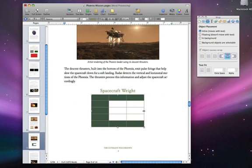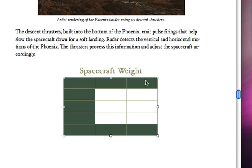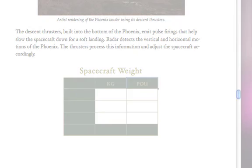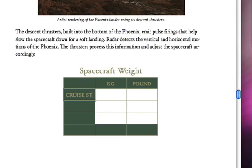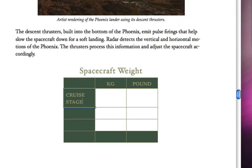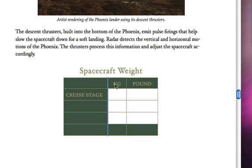To add your text to the table, just click inside a cell and start typing. If you want to resize rows or columns, just drag a cell border until it's just right.